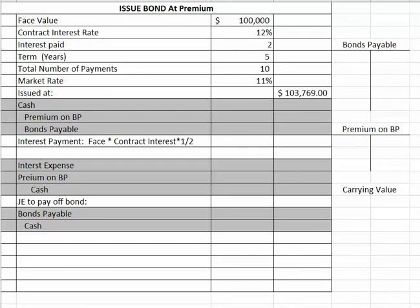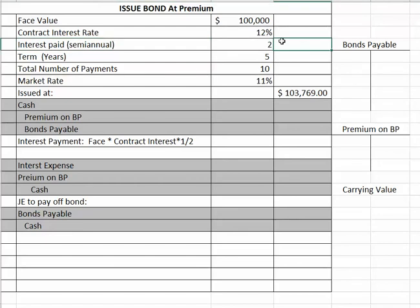We're going to go over the journal entries to issue a bond at a premium. We have a hundred thousand dollar bond. The contract interest rate is 12 percent, and interest is going to be paid two times a year — this is called semi-annual interest. It will take two payments a year and the term is five years, so the number of payments is five years times two times a year, which equals ten payments.